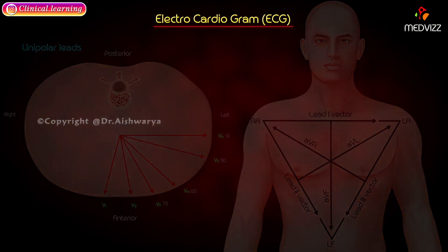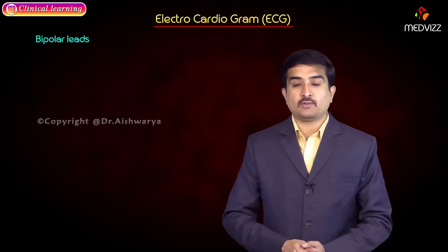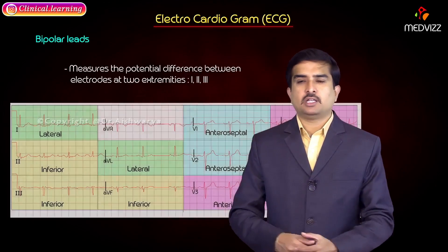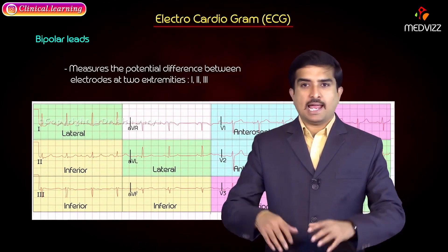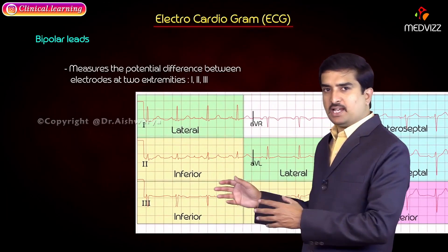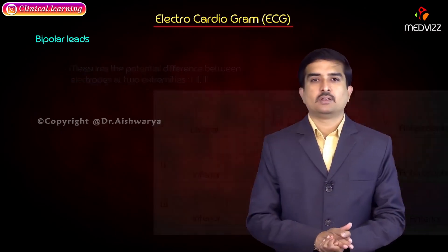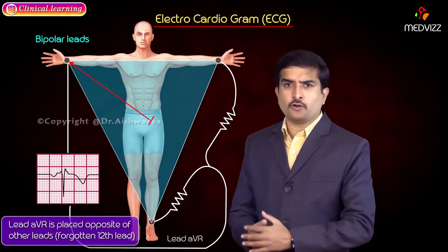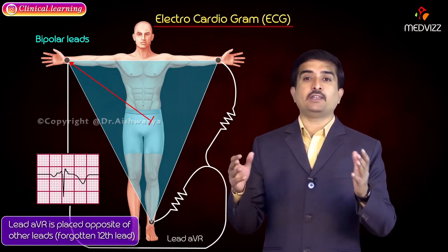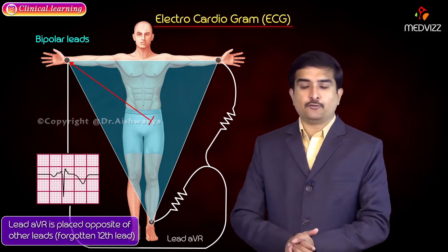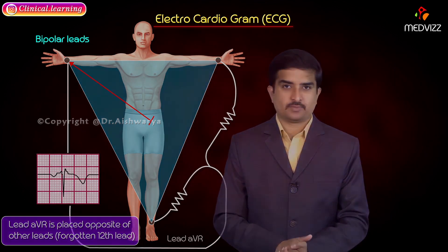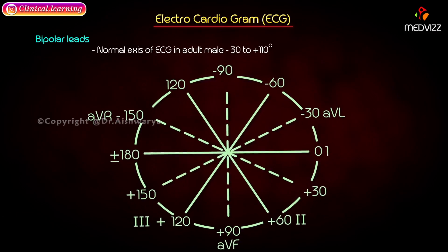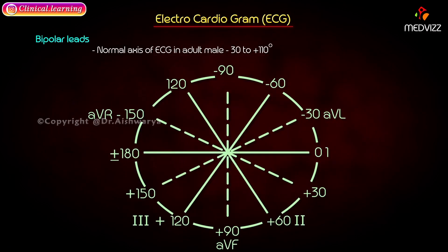Bipolar leads measure the potential difference between electrodes at two extremities — leads 1, 2, and 3. The lead AVR is placed opposite to other leads and is often ignored, which reduces 12 leads to 8. The normal axis of ECG in an adult male is minus 30 to plus 110 degrees.